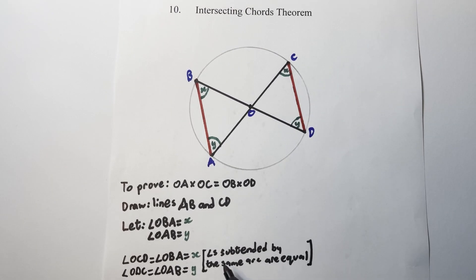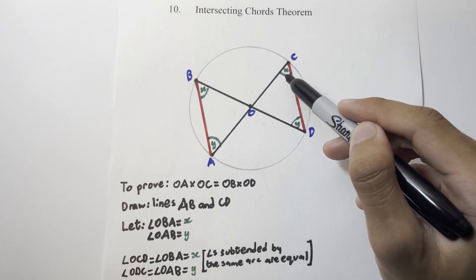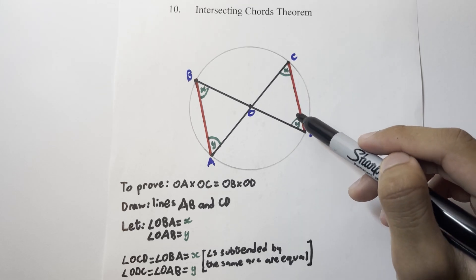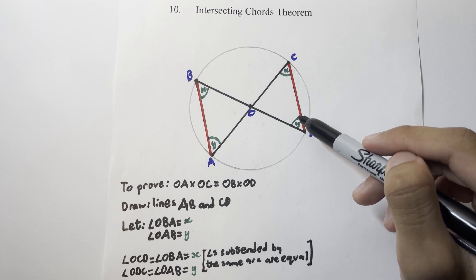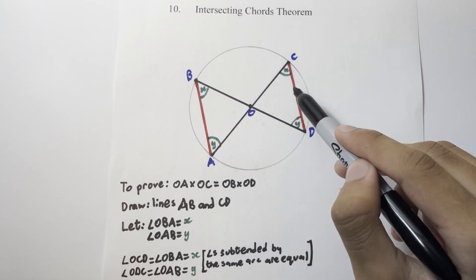Next, we use the rule that angles subtended by the same arc are equal. This tells us that angle OCD in this triangle is also equal to x, angle ODC in this triangle is also equal to y, because they're both angles subtended along the same arc.